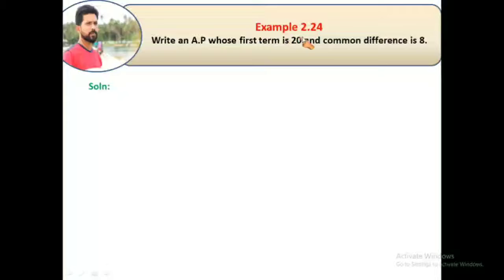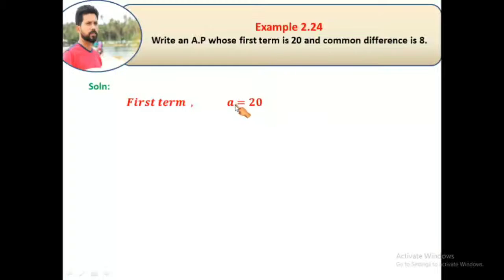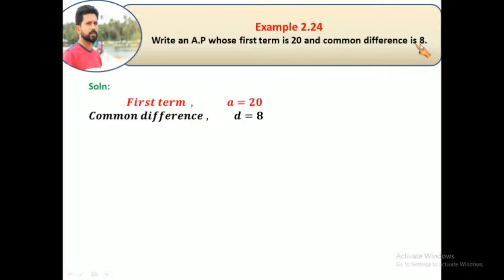Hi students, example 2.24. Write an AP whose first term is 20 and common difference is 8. So they are asking write an AP. They are given first term is 20 and common difference is 8. First term a equals 20, common difference d equals 8.